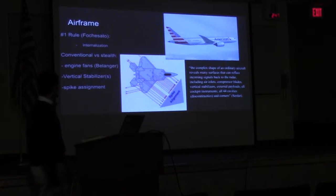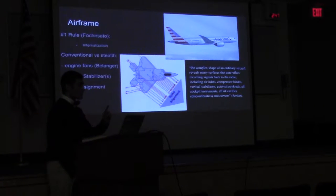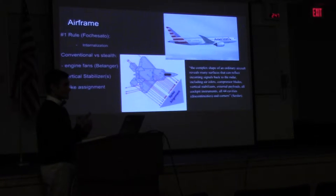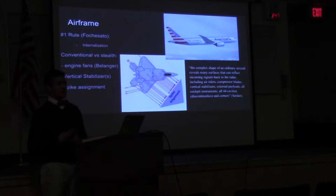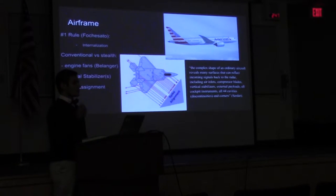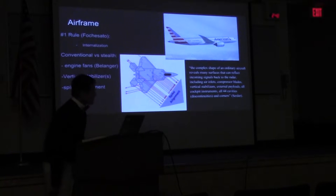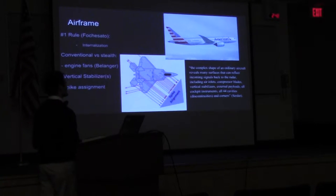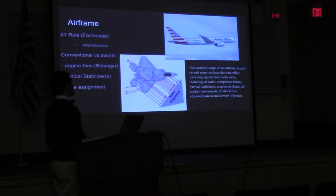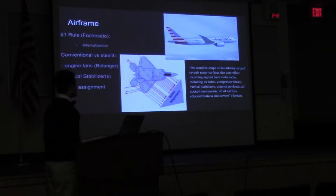In my interview with Mr. Focasado, his number one rule was to internalize anything and everything inside the aircraft — that means weapons in internal weapon bays, as well as any antennas on the outside of the airplane that could cause any radar return you don't want. Looking at conventional versus stealth: a typical airliner has a complex shape with many surfaces that can reflect incoming signals back to the radar, including air inlets, compressor blades, vertical stabilizers, external payloads, cockpit instruments, cavities (which are discontinuities on the airplane), and corners.